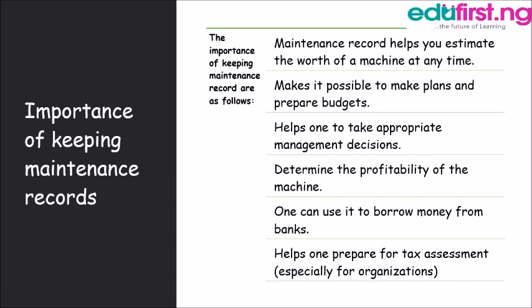What is the importance of keeping a maintenance record? A maintenance record helps you estimate the worth of the machine at any time. It makes it possible to make plans and prepare budgets. It helps one take appropriate management decisions. It helps determine the profitability of the machine. It can also be used to borrow money from the bank, and it helps one prepare for tax assessment, especially for organizations.